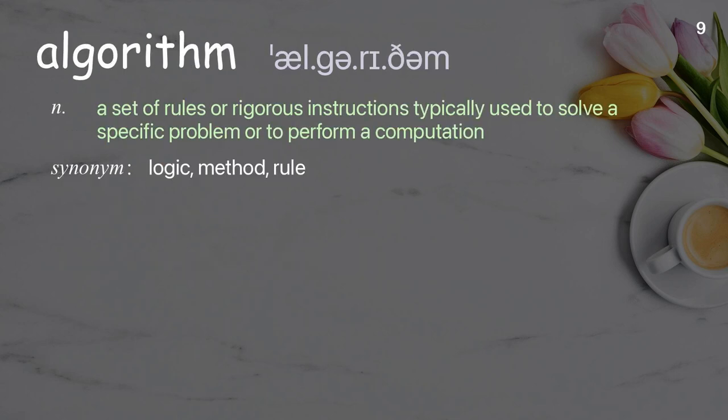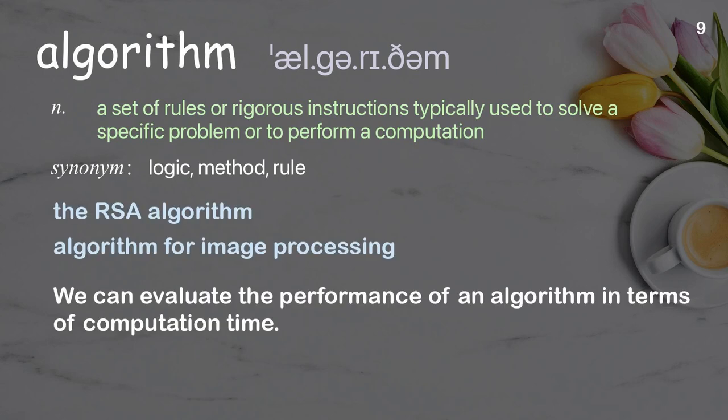Algorithm: a set of rules or rigorous instructions typically used to solve a specific problem or to perform a computation. Examples: the RSA algorithm, algorithm for image processing. We can evaluate the performance of an algorithm in terms of computation time.